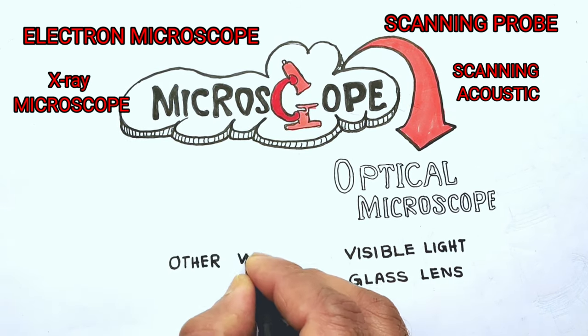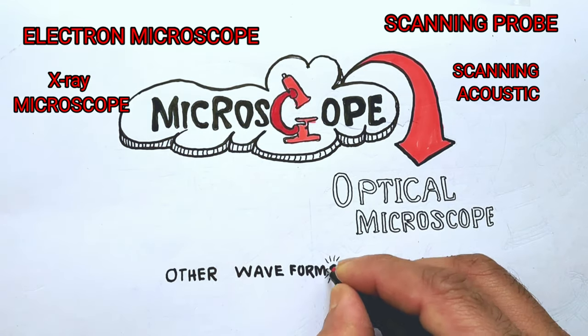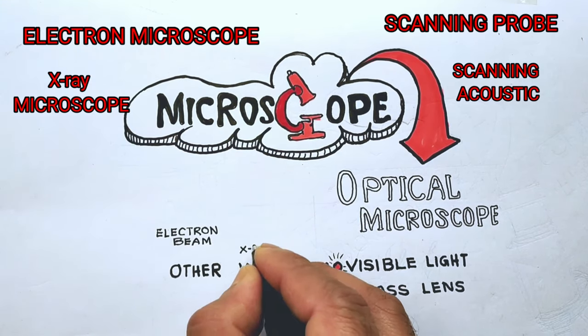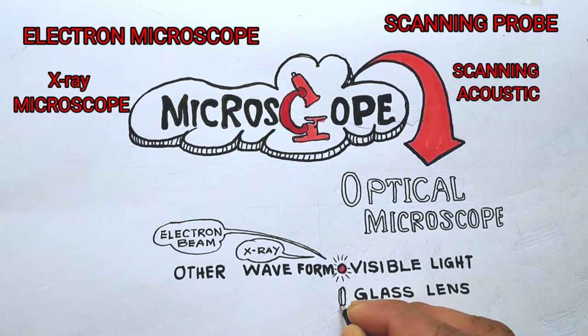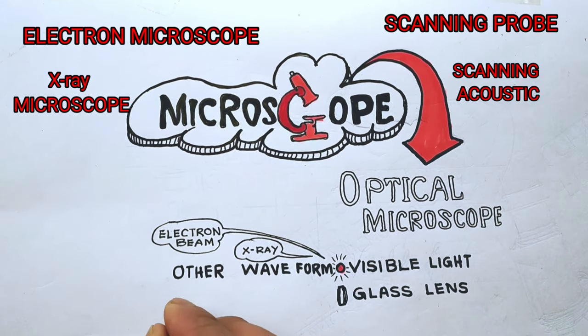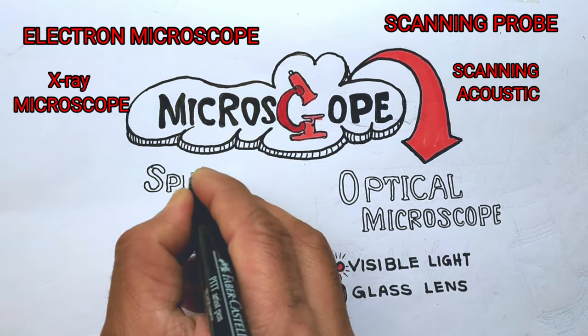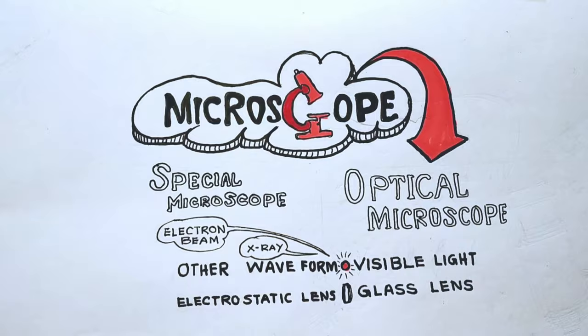Those microscopes, each with different level of magnification and resolution, use different waveforms like electron beam, x-ray acoustics, and uses different kinds of lenses like electromagnetic or electrostatic lens to create an enlarged image. These advanced microscopes are categorized as spatial microscope.